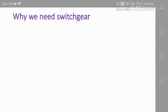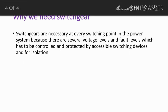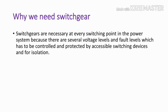Why do we need switchgear? Switchgear is necessary at every switching point in the power system, because there are several voltage levels and fault levels which have to be controlled and protected by an accessible switching device and for isolation. For higher voltages like 6.6 kV and 11 kV, the fault current will also be very high.